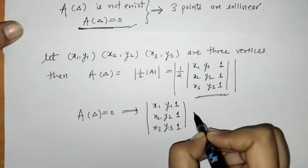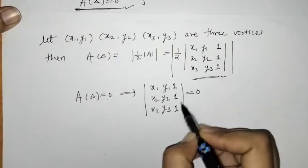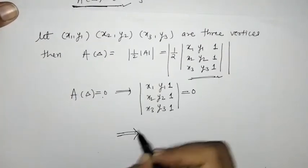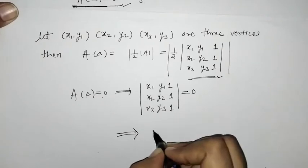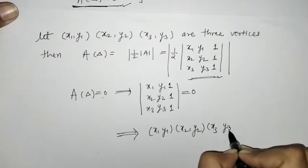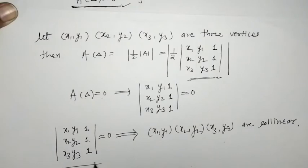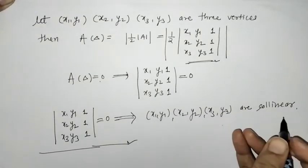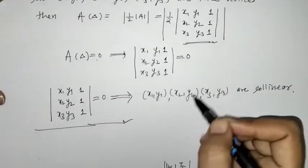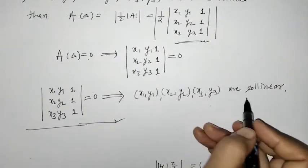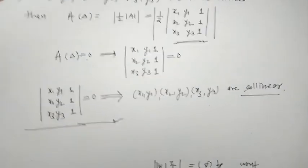So this determinant equals zero. When the area of the triangle is zero, this determinant is zero, and this implies that the three points (x1, y1), (x2, y2), (x3, y3) are collinear. This determinant being zero is the condition for collinearity of these three points. To show three points are collinear, we simply show this determinant is zero.